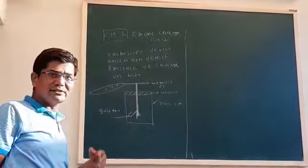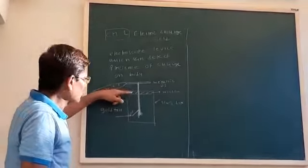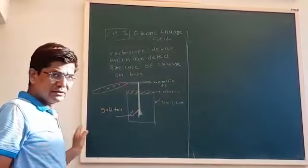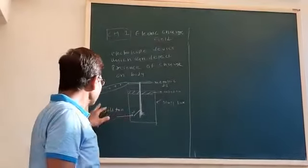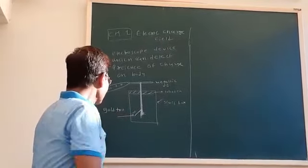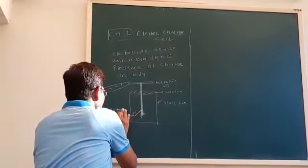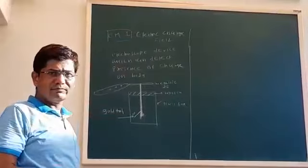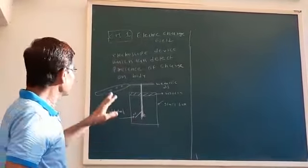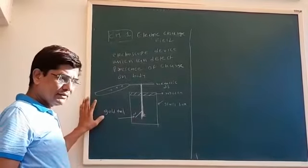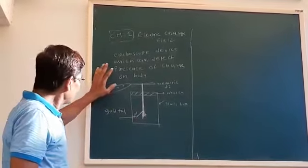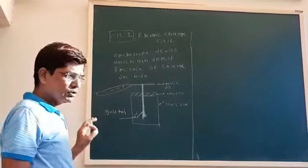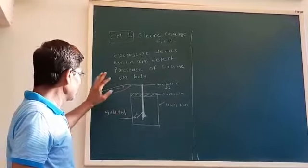Initially, if there was a negative charge on the foil, then because of the incoming positive charge it will be neutralized. This is how, by using the electroscope, we can detect the presence of charge. The electroscope can detect the presence of charge on any body.